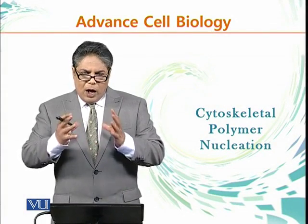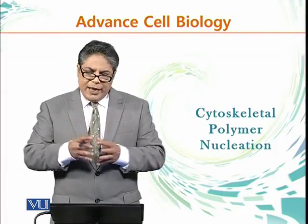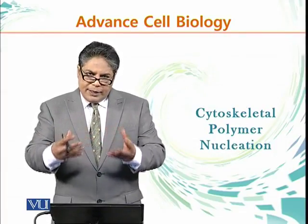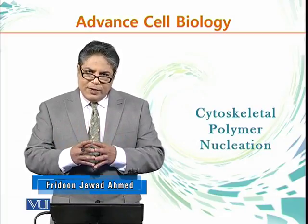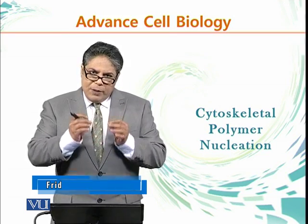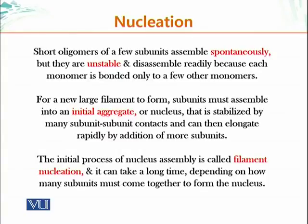I would like to talk about how these polymers form to begin with. You can throw monomers into a test tube and ask whether they will assemble into filaments — microtubule elements, intermediate filaments, or actin filaments — and what the requirements are to initiate polymerization. Short oligomers of a few subunits assemble spontaneously but they are unstable; they disassemble readily because each monomer is bonded to only a few other monomers.